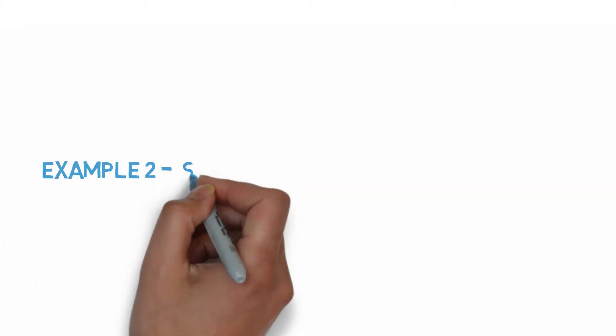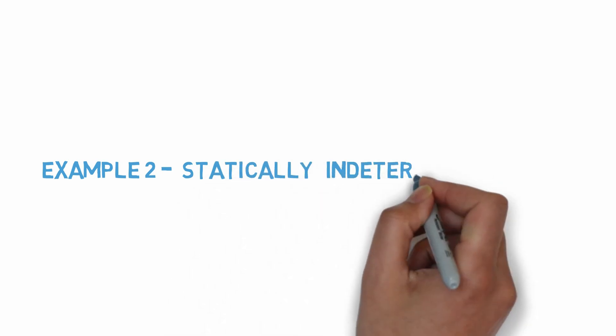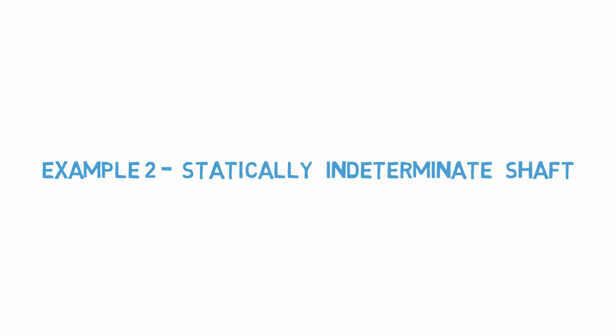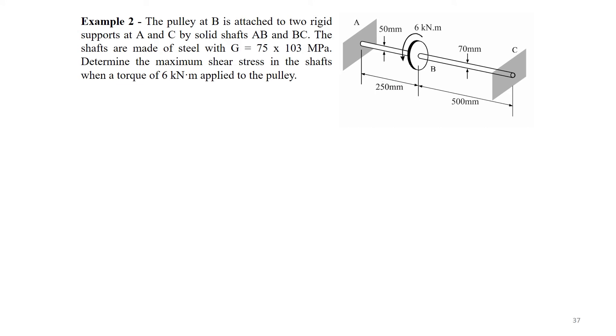Now we are going to look at an example with statically indeterminate shaft. The first step is to draw the free body diagram at A and C by solid shafts AB and BC. The shafts are made of steel with G equals to 75 times 10 to the power 3 megapascals. Determine the maximum shear stress in the shafts when a torque of 6 kNm applied to the pulley.